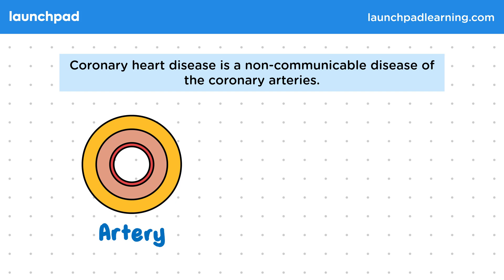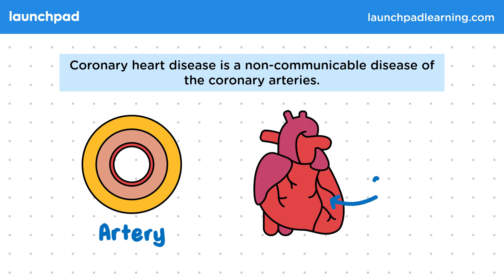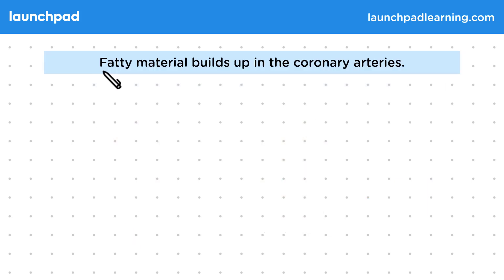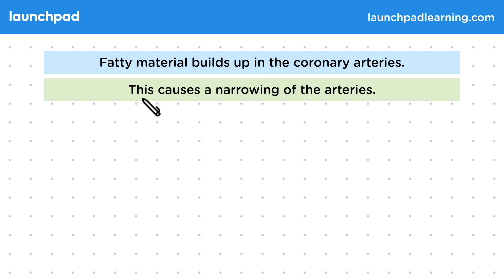The coronary arteries supply the heart muscle with blood containing glucose and oxygen. This allows the heart to continue beating effectively. So how does coronary heart disease develop? Fatty material builds up in the coronary arteries, which causes a narrowing of the arteries.